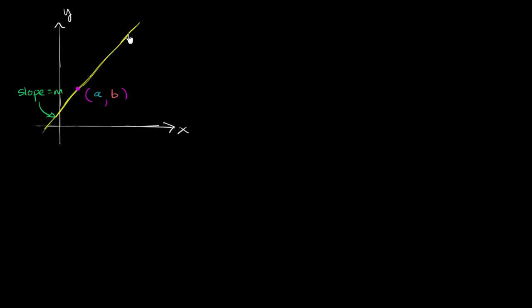So what I've drawn here in yellow is a line. And let's say we know two things about this line. We know that it has a slope of m, and we know that the point a comma b is on this line. And so the question that we're going to try to answer is, can we easily come up with an equation for this line using this information?